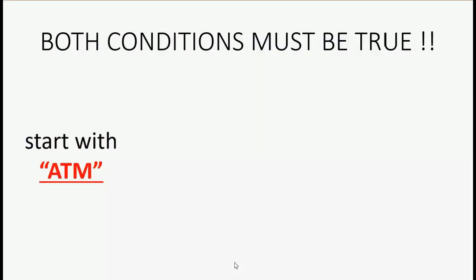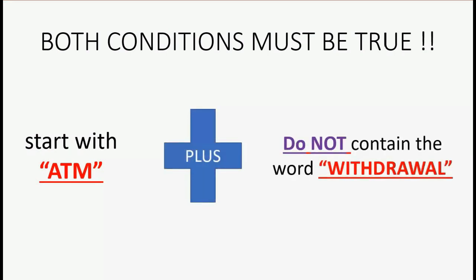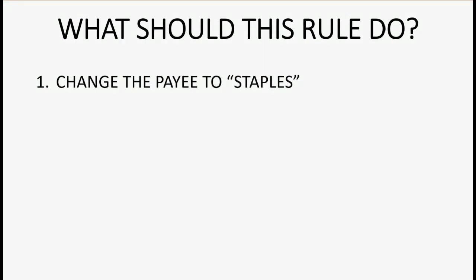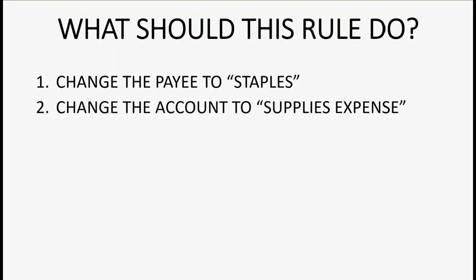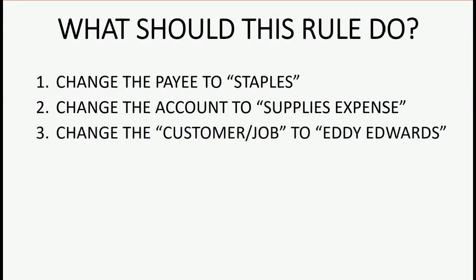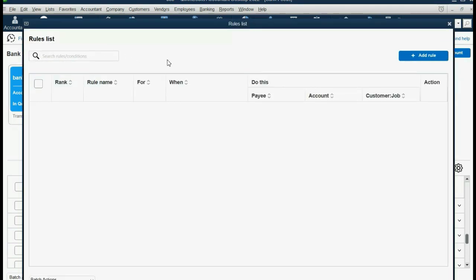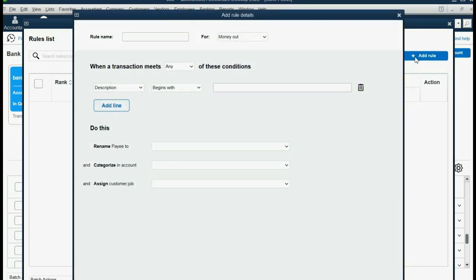Since both conditions must be true, it has to start with ATM and also not contain the word withdrawal in order for that transaction to be recorded with that rule. We want the rule to change the payee of the transaction to Staples, change the account to Supplies, and because we're in advanced mode, we also want to change the customer job to Eddie Edwards. Now if we click Rules and get the rule list, in the top right we click Add Rule.